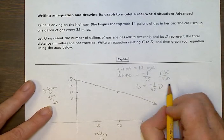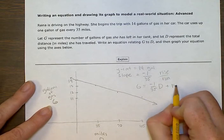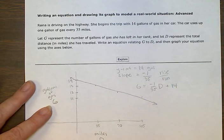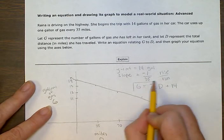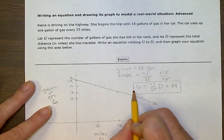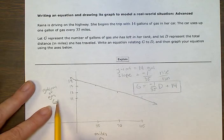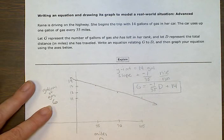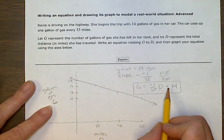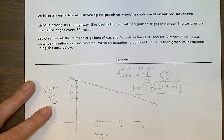And then we put the y-intercept at the end of positive 14. So this is our equation. G was the y side. We put our slope next to the D, which represented the x side. And then we added the y-intercept to finish the equation.